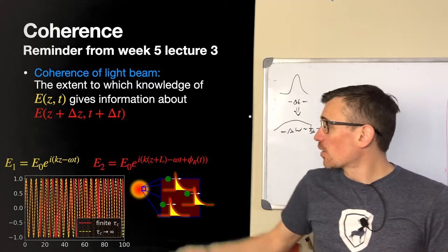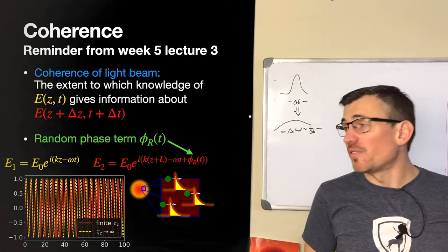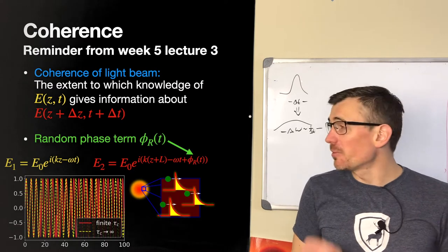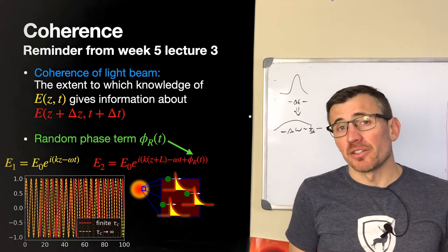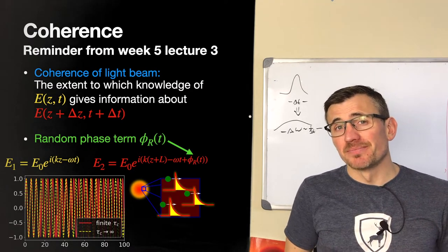Either way, we're going to have a finite coherence length. So our model is a coherent beam plus a random phase variation, and this is going to be very relevant to our topic of interference and interferometers.